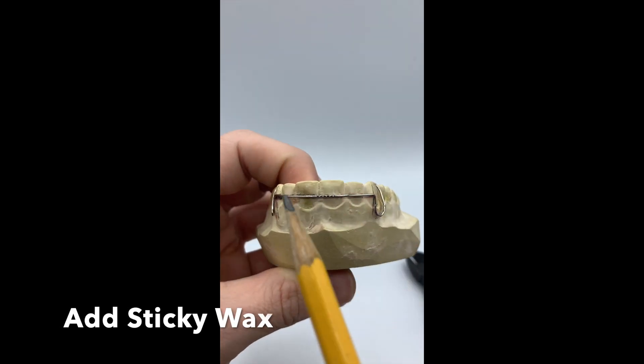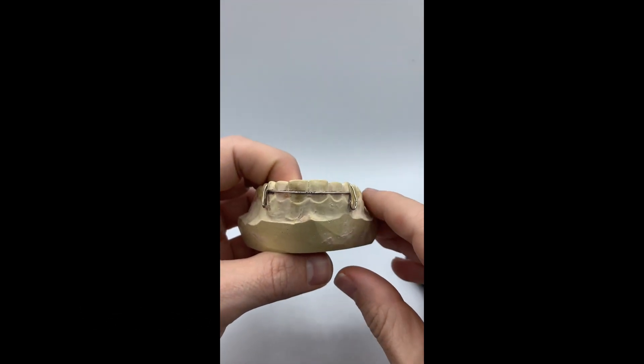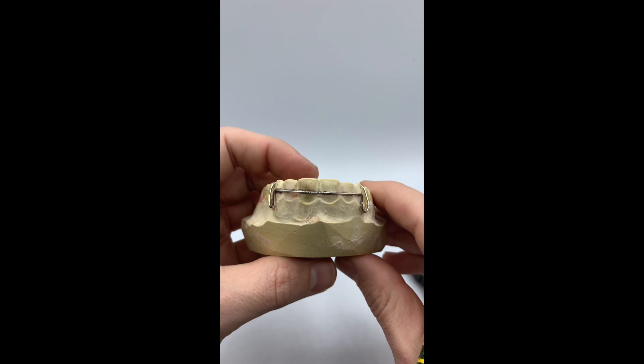Seal your wire in place. You want to add sticky wax to the labial surface, cuspid loops and between the centrals. We want to twist it.